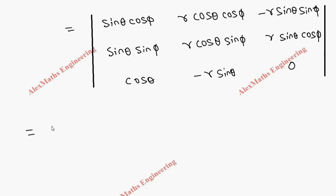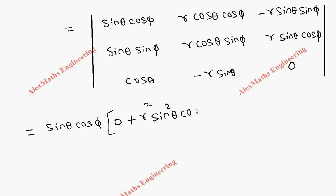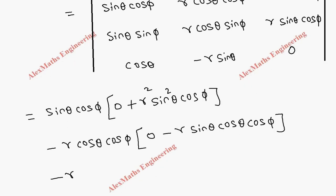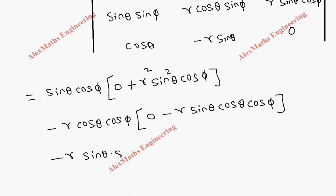Now expanding the determinant: the first term is sin θ cos φ. When evaluated, one part becomes zero, and we get +r² sin² θ cos φ. The second element contributes −r cos θ cos φ; expanding gives −r sin θ cos θ cos φ. The last element is −r sin θ sin φ, which expands to give −r sin² θ sin φ − r cos² θ sin φ.